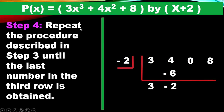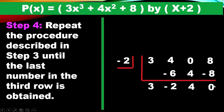Step 4: Repeat the procedure until the last number in the third row is obtained. We bring down 3, then 3 × (−2) = −6, and 4 + (−6) = −2. Then −2 × (−2) = +4, and 0 + 4 = 4. Then 4 × (−2) = −8, and 8 + (−8) = 0.